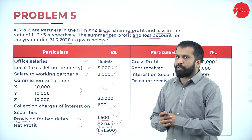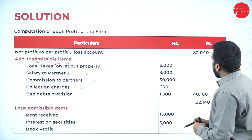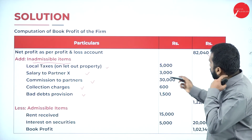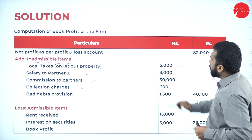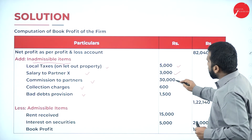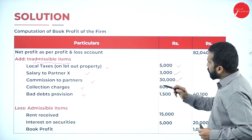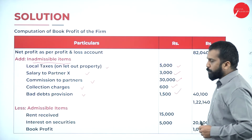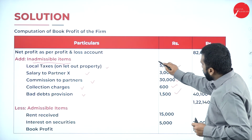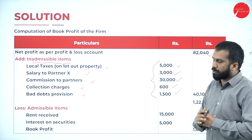We started with net profit. Now: net profit is 82,040. Then add local taxes, salary to partner, commission to partner, collection charges, bad debts provisions. All the informations are given.